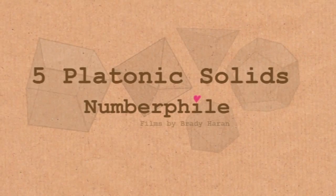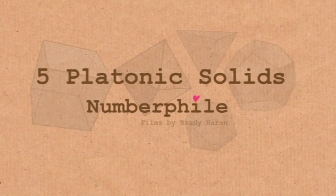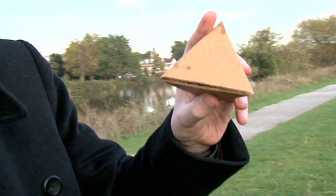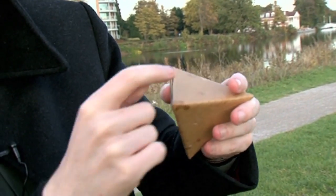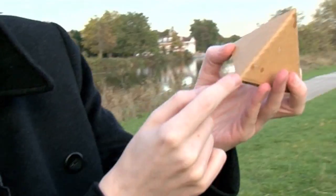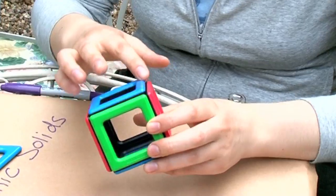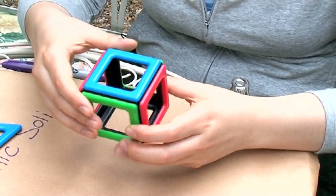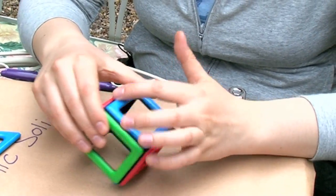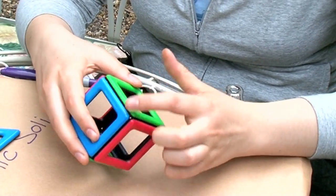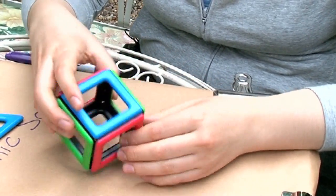I would like to talk about the number five, and the thing I like most about the number five is that there are only five Platonic solids. The definition of a Platonic solid is a shape where you've got different sides, but all of the sides are the same shape — a regular polygon, like a square where all the sides are the same length, the angles are all the same, and every corner looks the same.